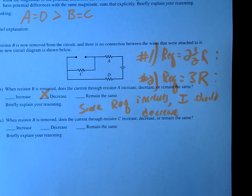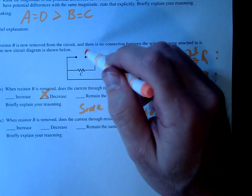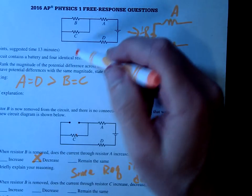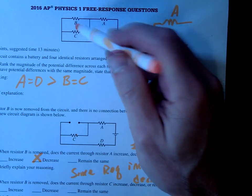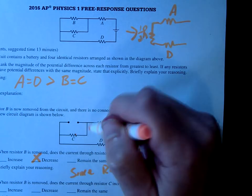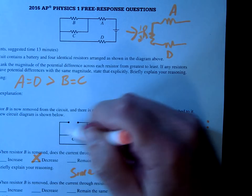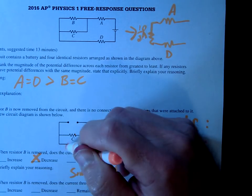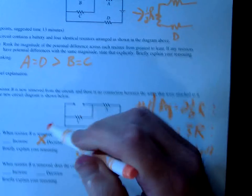All right, if we take out B, what happens through C? Well, in this case, if we take out B, notice earlier B and C had to split the current. But once we take this out, all of the current is going to be forced through C. So even though the overall current goes down, the current through C should go up.